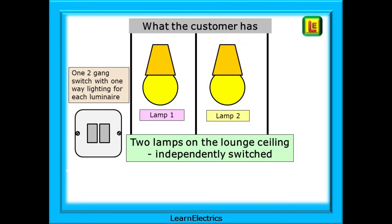We can begin by looking at what the customer might already have. In this example scenario, let's say they already have two lamps on the lounge ceiling mounted in the usual one-third distance apart. Each of the lights is controlled independently by a single two-gang switch, so the lights are one-way with one gang for each lamp.